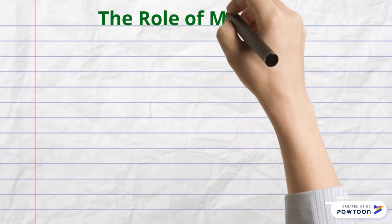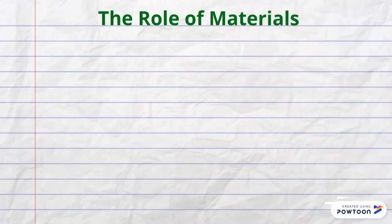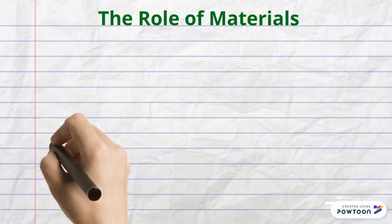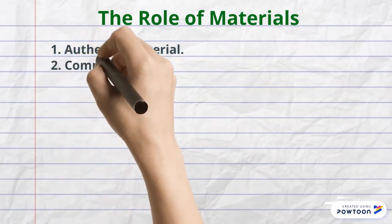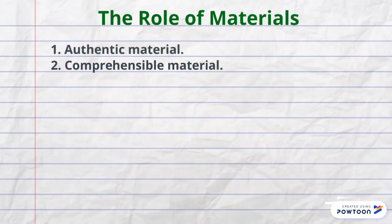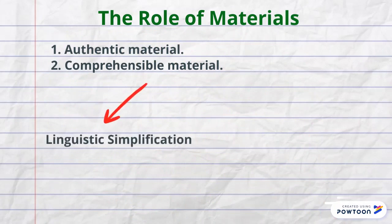The role of materials: advocates of CBI recommend that a rich variety of materials be identified and used, with the central concern being that the materials are authentic — that is to say, real-world materials like magazines in the target language. On the other hand, the material needs to be comprehensible to the learners, so teachers have to adapt it, possibly using linguistic simplification and redundancy.